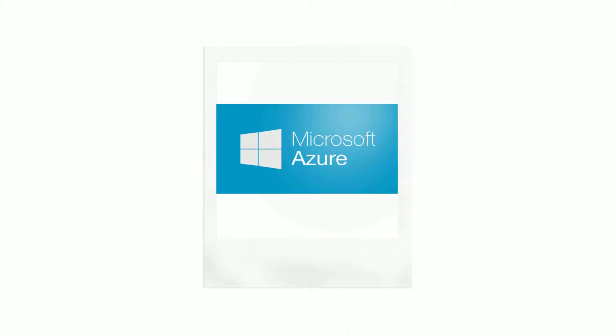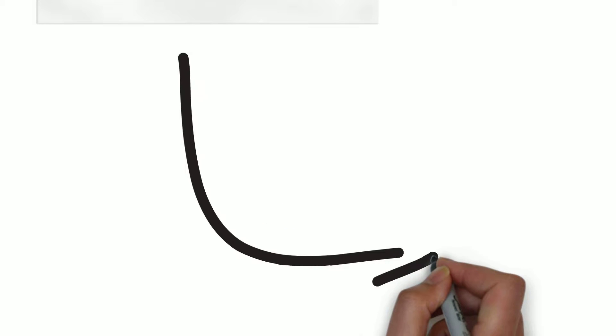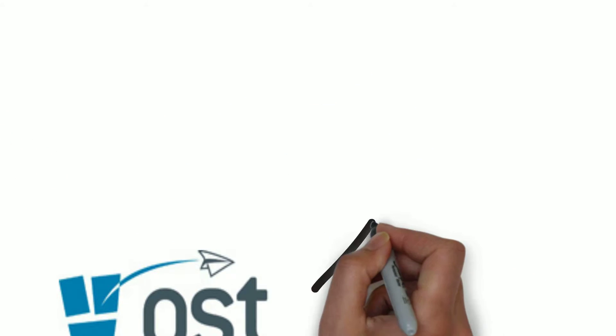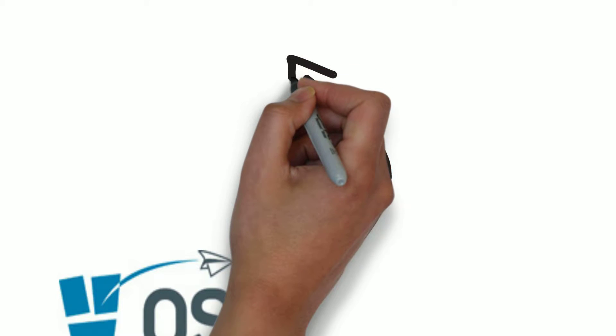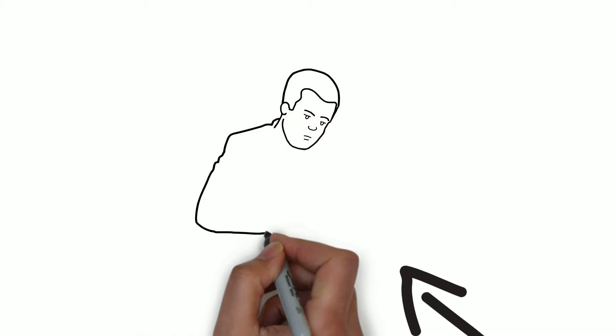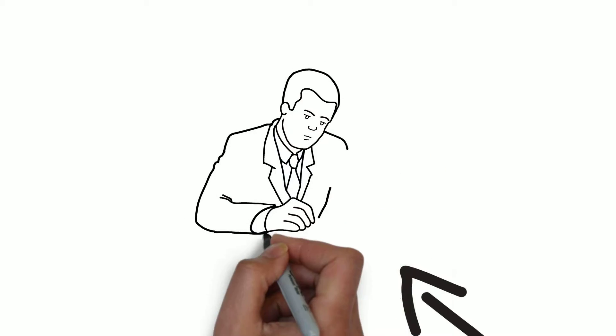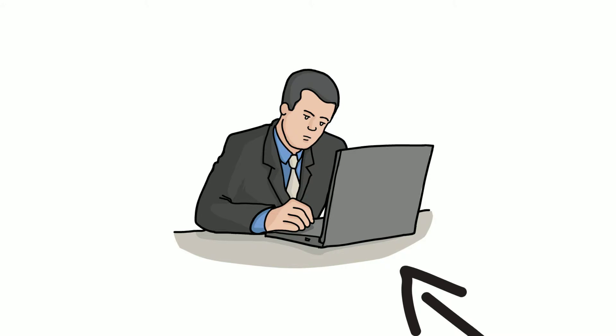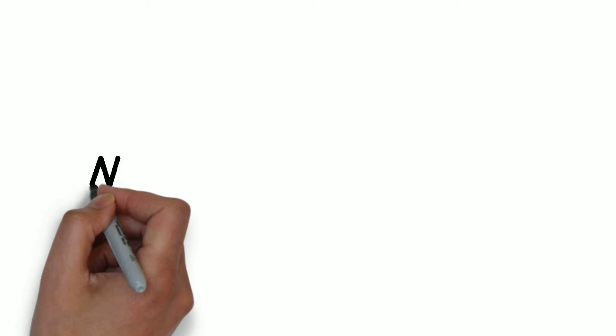OST is a Microsoft Azure cloud service provider, or CSP. What does it mean to be a cloud service provider? It means that we have the ability to purchase Azure services directly from Microsoft and provide them to our clients as a service from OST. So you get the exact same Azure service that you can get from the web, but it's backed by OST. This means that OST provides you the first line of support — so you call OST if you have a problem or a question — and OST will manage any escalations to Microsoft for you. We've got your back.